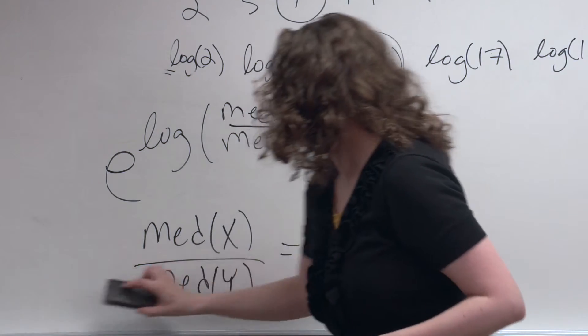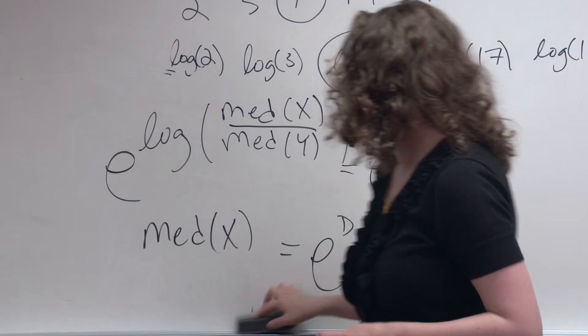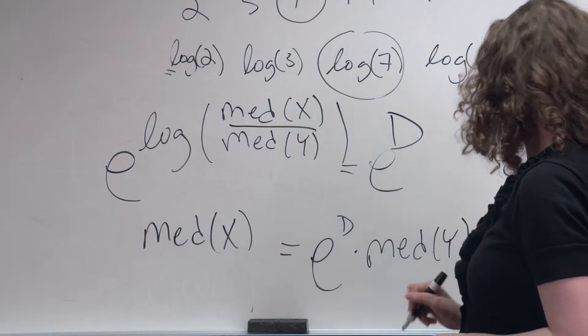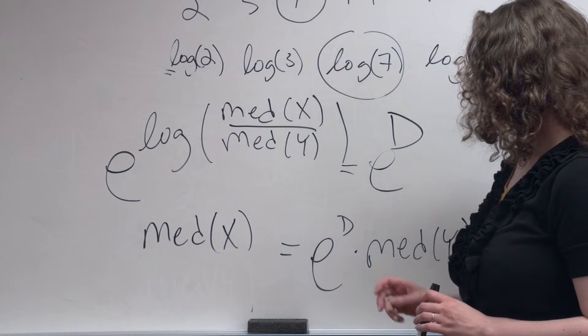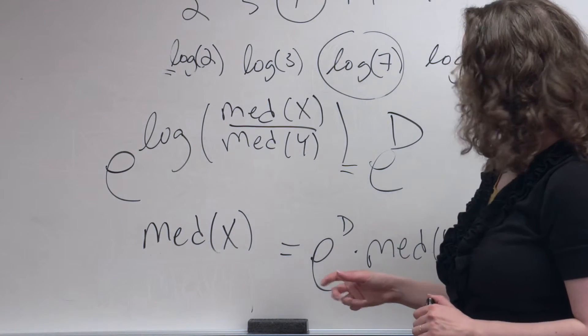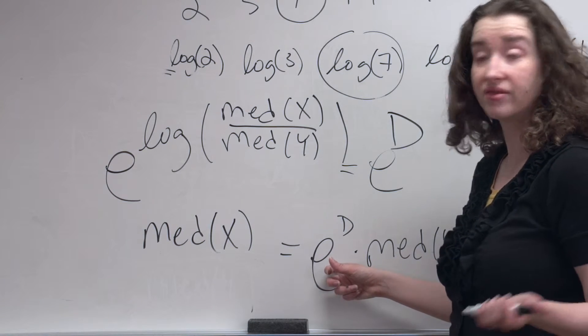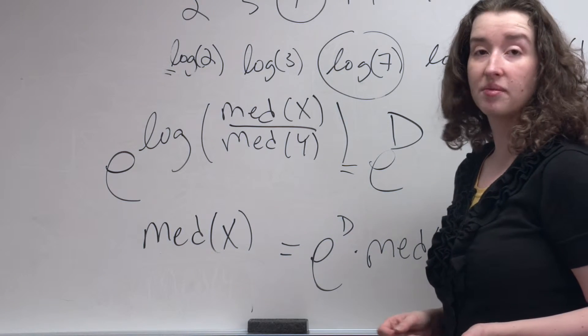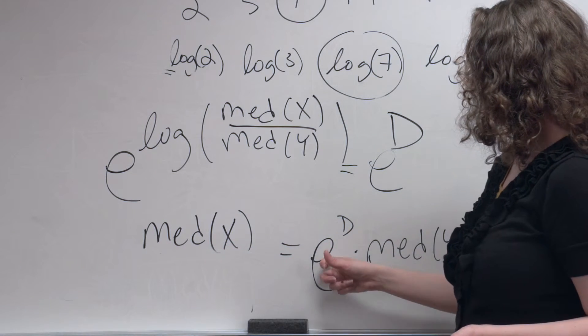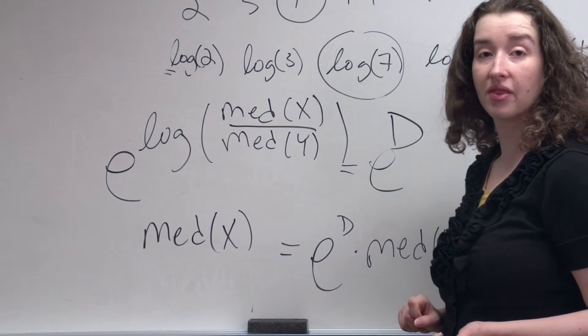So one way to talk about how the original incomes relate to each other without having to mention logs is to calculate e to the d, whatever that is, for example 5, and say the ratio of the median incomes on the original dollar scale is 5. Another way to look at it, another way to say the same thing is to multiply both sides by this denominator, and then to say, if we take the median income in the Northeast and multiply by this number, 5, we get the median income in the Midwest. The median income in the Midwest is 5 times bigger than the median income in the Northeast.